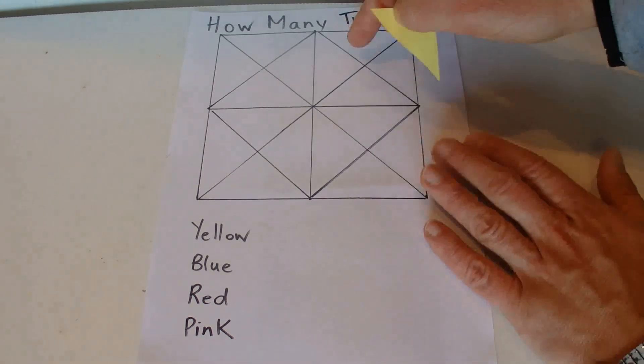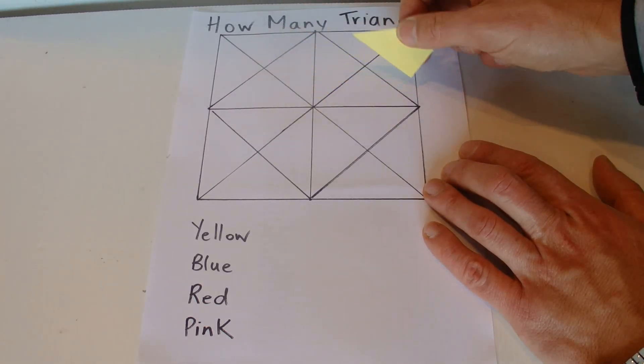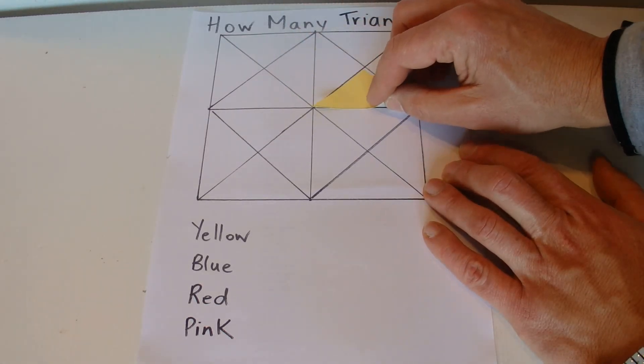So I reckon a better way to do it is actually break it up into grids and count the number of small triangles first and then work your way through logically.